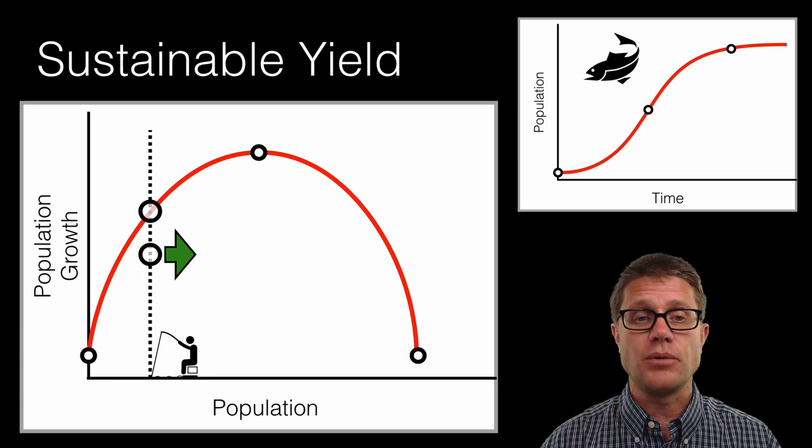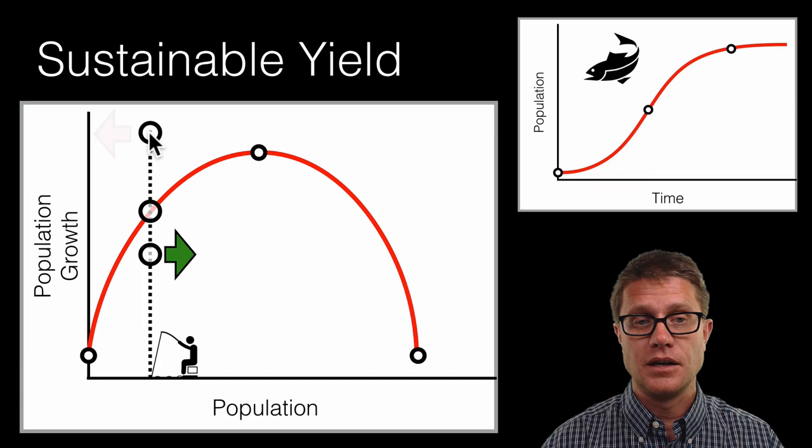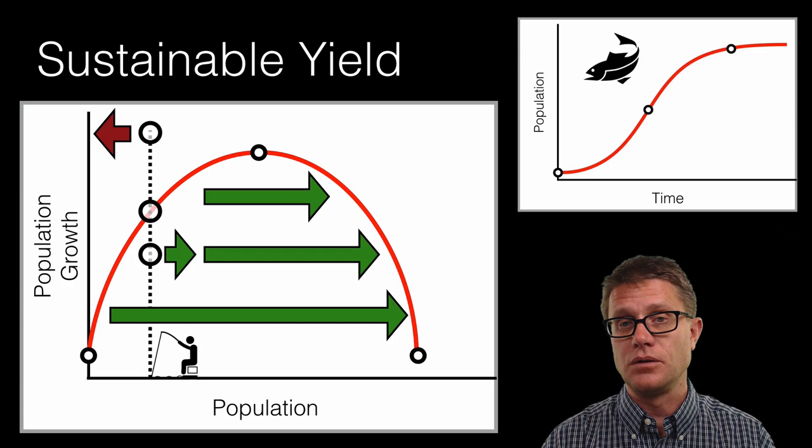Now likewise if we were to catch more than that amount, so if we are catching more fish than the rate, what is going to happen? It is going to move to the left. And so with a curve like this, anything below the curve is going to move to the right. And anything above the curve is going to move to the left.